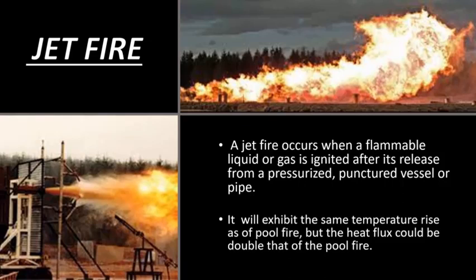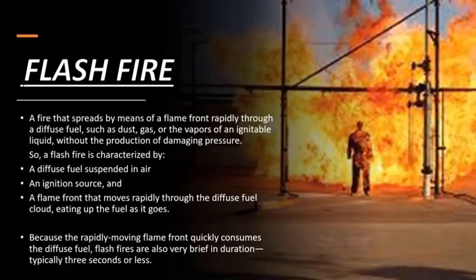The duration of jet fire will be determined by the release rate and the capacity of the source. Then we have flash fire. A flash fire occurs when a cloud of flammable gas and air is ignited. The speed of burning will depend on the concentration of the flammable component and also the wind speed prevailing there. Within a few seconds of ignition, the flame spreads both upwind and downwind of the ignition source. Initially, the flame will be contained in the cloud due to the premix burning of the region within the flammable limits.